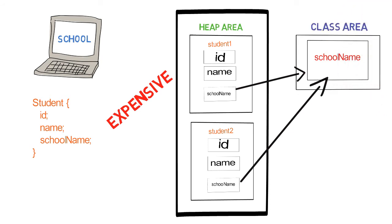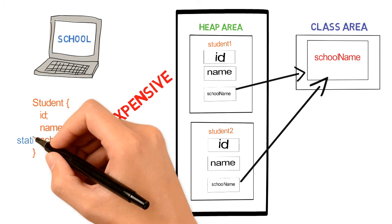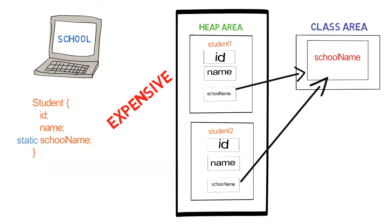So why allow school name to take memory in the heap area? We can simply take it out and store it in the class memory. Making it static will ensure that this common field takes memory in the class area. Static is used for a method or variable which is going to be the same for every instance of a class. Your school name is common for every instance, so we make it static, and since it takes memory in the class area, it is more efficient performance-wise.